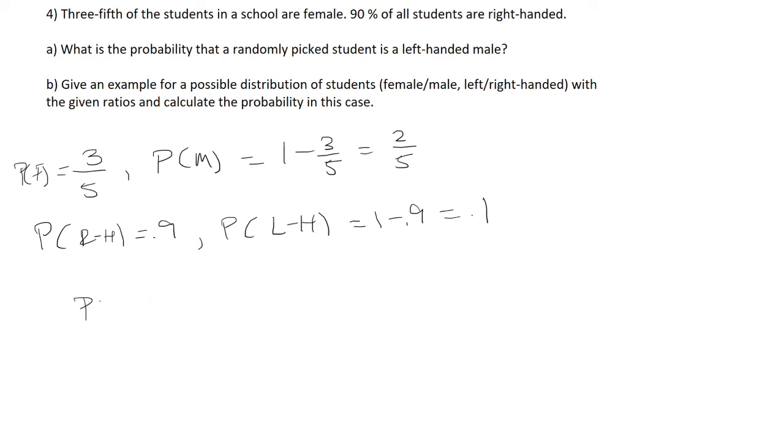So if you want to pick a student that is a left-handed male, then that is the same thing as multiplying the probability that a person is left-handed with the probability that a person is male.